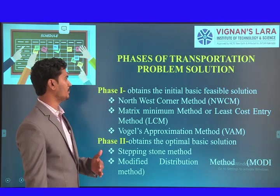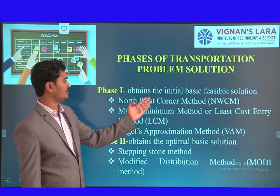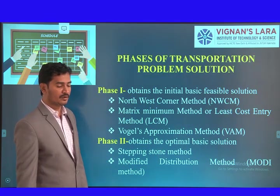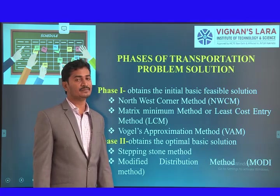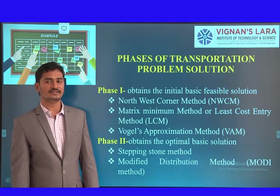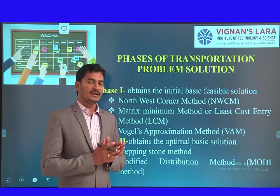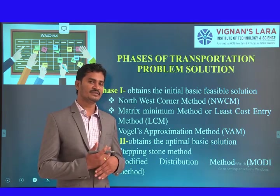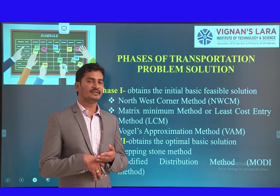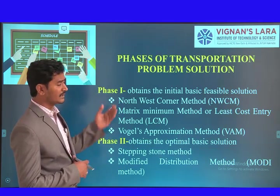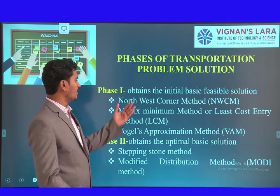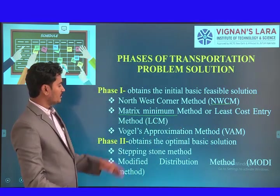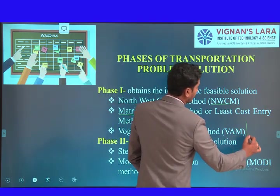Coming to the phases of the transportation problem: Phase 1 is to obtain the initial basic feasible solution (IBFS). We have three methods to obtain the IBFS. First is the Northwest Corner method, where we allocate resources starting at the top-left (northwest) corner of the table. Second is the Least Cost Entry method (also called Matrix Minimum method), where we allocate at the cell with minimum cost. Third is Vogel's Approximation Method (VAM), also called the penalty method.